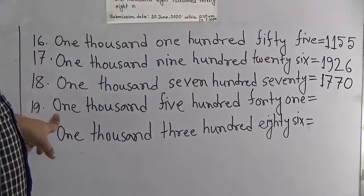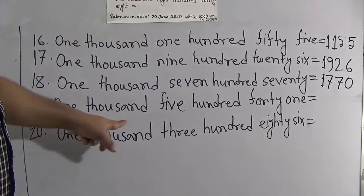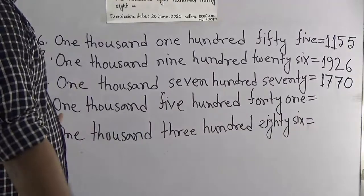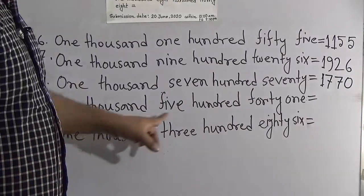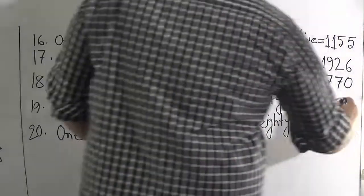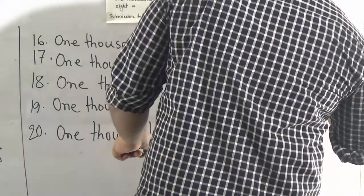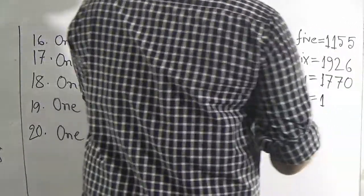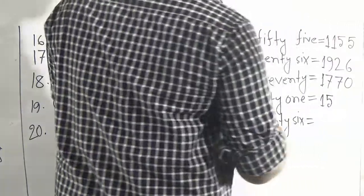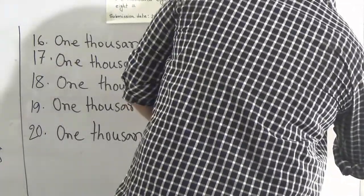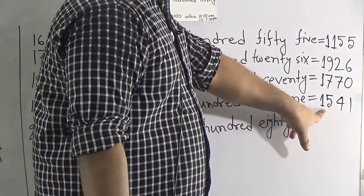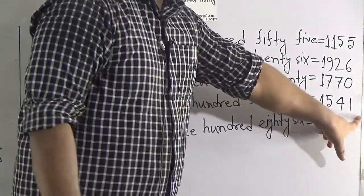Our next number is 1,541. For 1,000 we write 1, 500 means 5, and 41 means 4 and 1. So it is called 1,541.